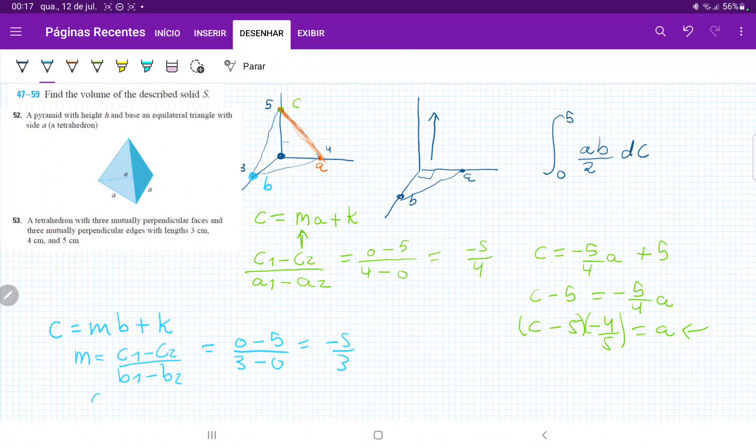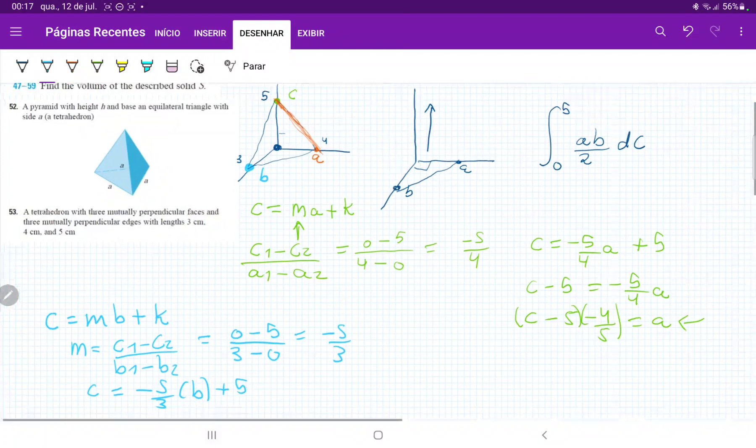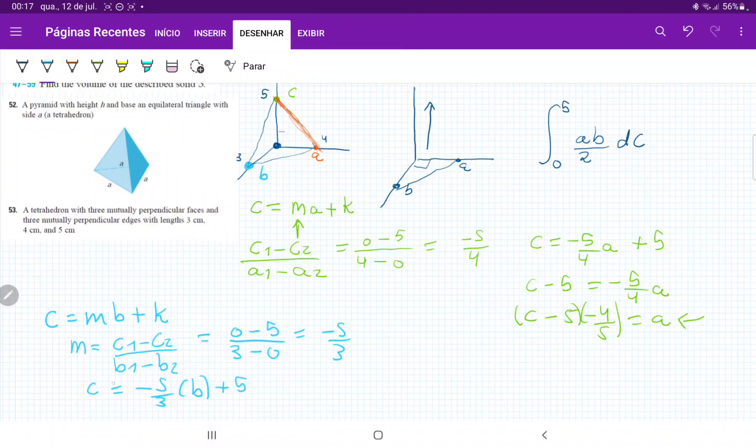So once more, C is equal to minus 5 over 3 times B, and then plus the C-intercept, which is also 5. Therefore, let's move things around. So C minus 5 is equal to minus 5 over 3B, and thus C minus 5 times minus 3 fifths is equal to B.